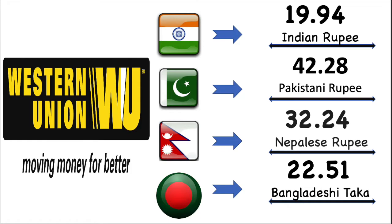Now we are going to talk about Western Union exchange value for each country in details. Indian Rupees market exchange value is 19.90. Pakistan Rupees market exchange value is 42.28. Nepal Rupees market exchange value is 32.10 Nepalese Rupee. Bangladesh market exchange value is 22.25 Bangladesh Taka.